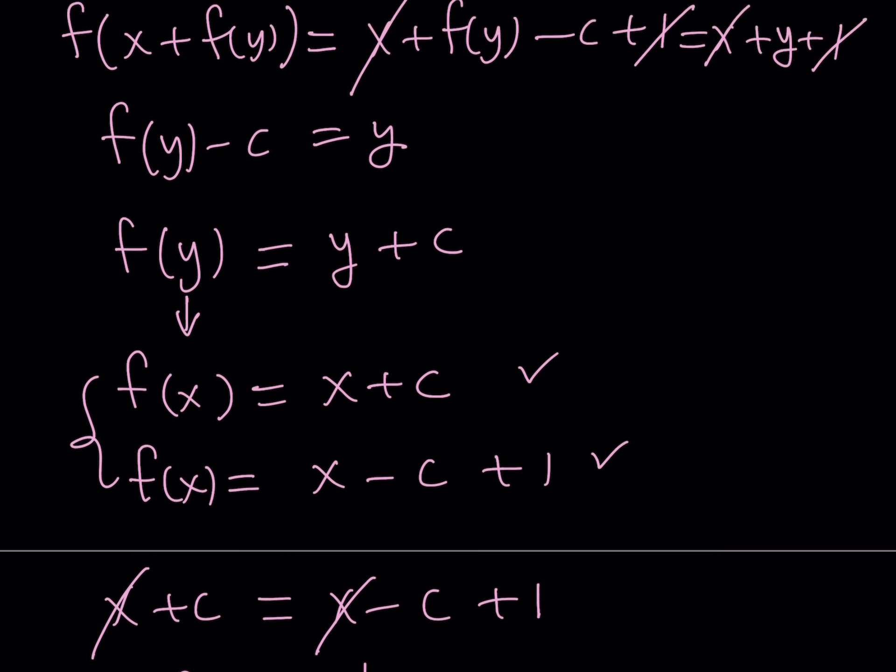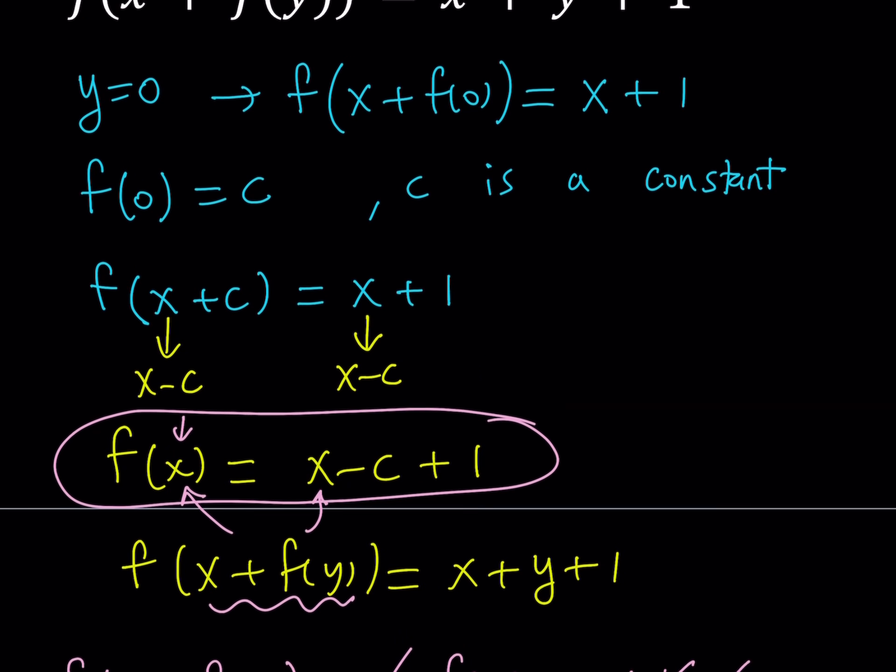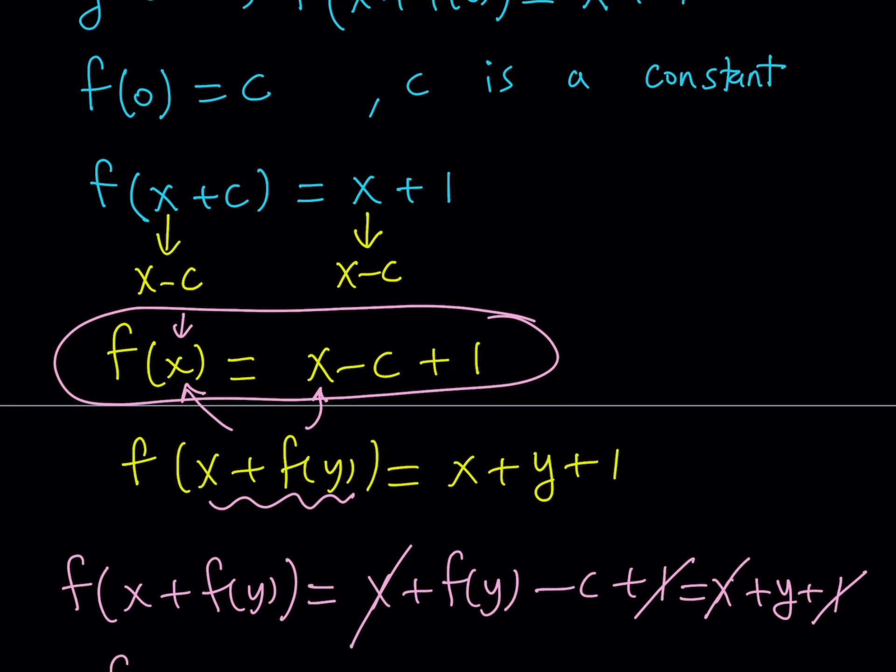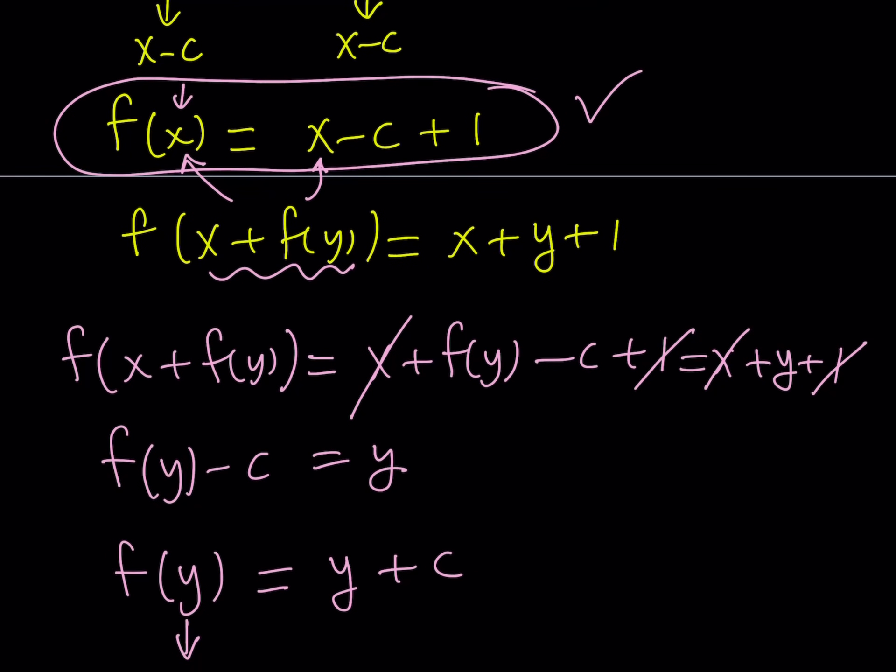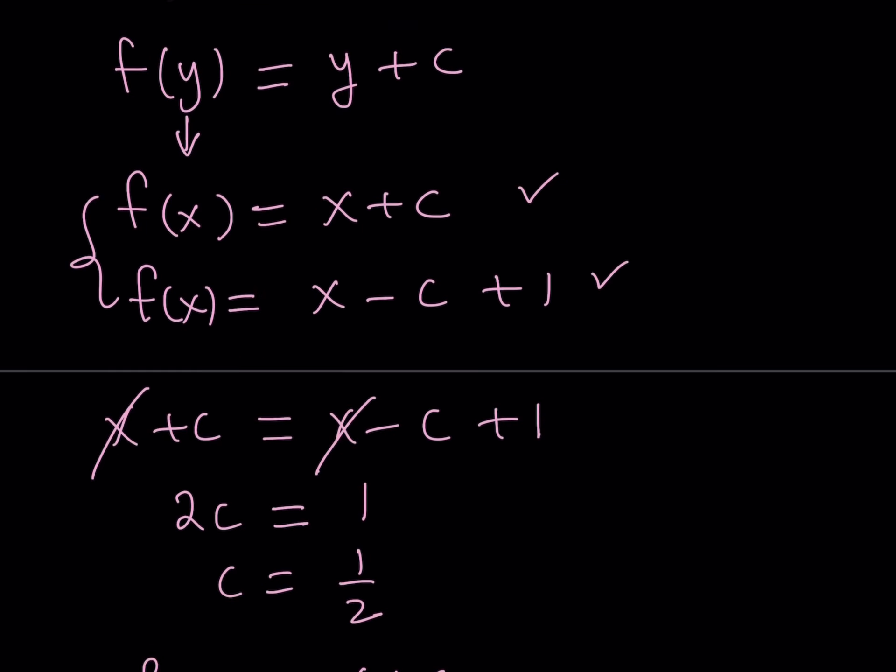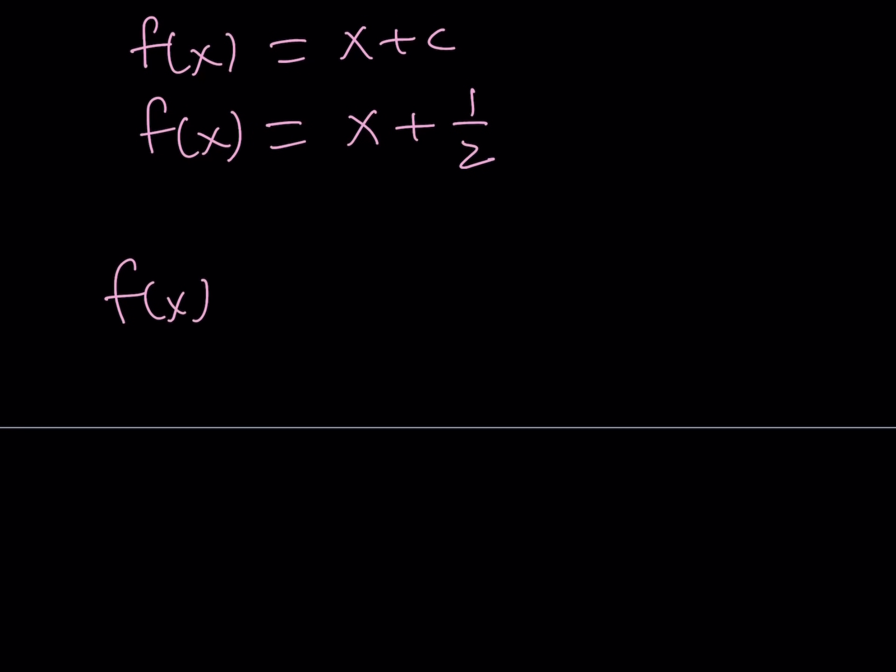Now, when we got this expression here, f of x plus c equals x minus c plus 1, let's go ahead and get back here and see what kind of alternative methods we have. So f of x can be written as x minus c plus 1. This is kind of like my second method. Now, how am I going to use the value of c or how am I going to use this equation to find c? Now, remember, c is equal to f of 0, right? That's how we named it.